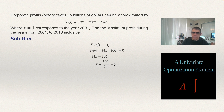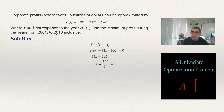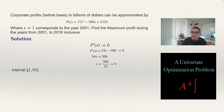At x = 9, the derivative is zero, making it a possible maximum. We also need it to lie within our interval. Since 2001 corresponds to x = 1 and 2016 corresponds to x = 16, we are working on the closed interval [1, 16]. There are three candidate values for the maximum.